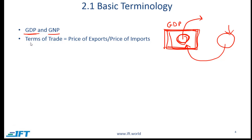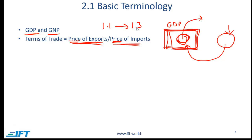The next piece of terminology is terms of trade. This is simply the price of exports divided by the price of imports, where the price is based on an index. The key point is that if this ratio goes up, there is an improvement in the terms of trade. For example, if this ratio was originally 1.1 and goes up to 1.3, it means the price of exports is rising relative to the price of imports, which is an improvement from the perspective of a particular economy.